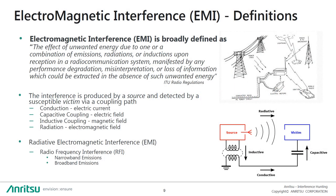Before moving on, we need to start with a bit of definitions. Generally, we are talking about electromagnetic interference, or EMI for short. The International Telecommunications Union broadly defines EMI as any unwanted electrical or electromagnetic energy that causes undesirable effects, degraded performance, or malfunction in electronic equipment.